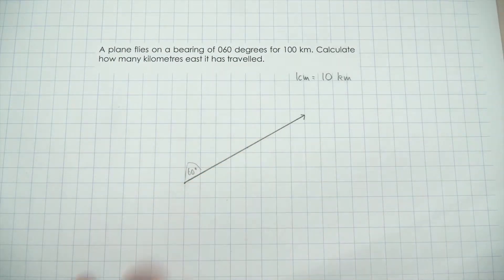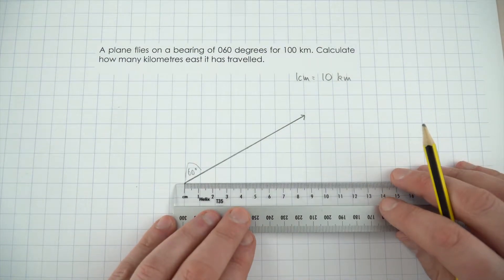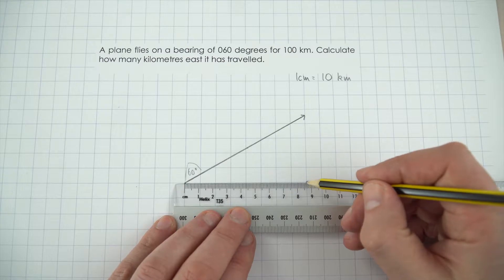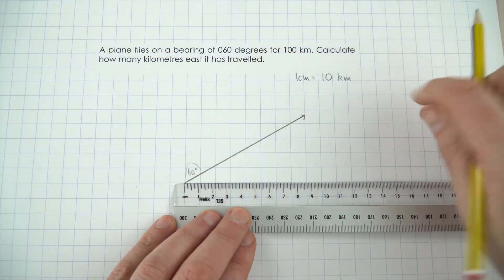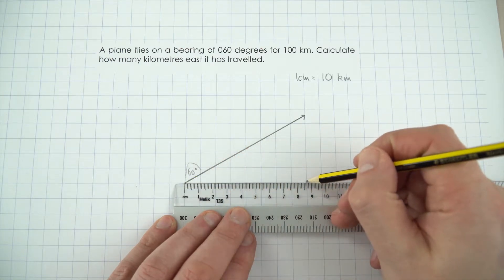What I can then do is, I want to know how much further east it's gone, and I can just measure this with my ruler, and when I do that with my ruler, it comes out at 8.7cm. On this paper here, each square isn't exactly a centimetre. So this is 8.7cm.